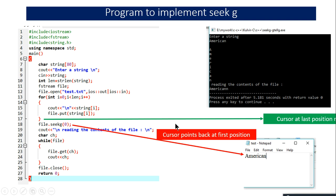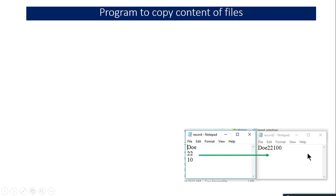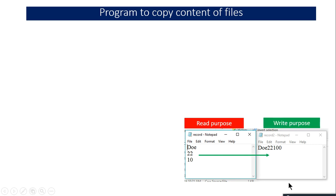Another important question that appears frequently in BTech and BCA exams is copying the contents of one file into another. For example, a file record.txt contains values like 'do', 22, and 10, and we want to copy this into another file called record2. The source file record.txt is already created; the program's purpose is to copy its contents into record2.